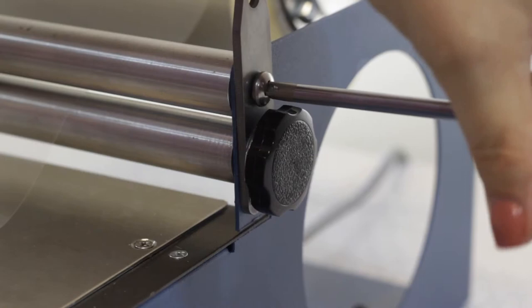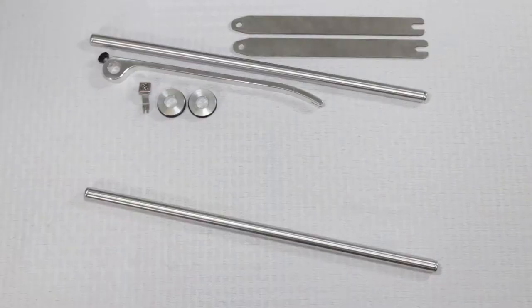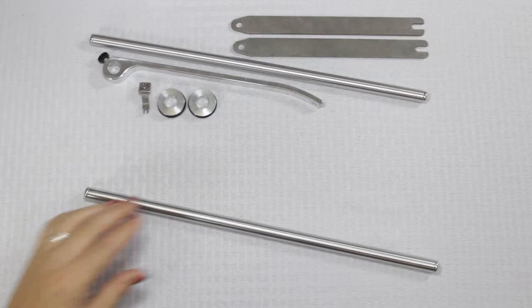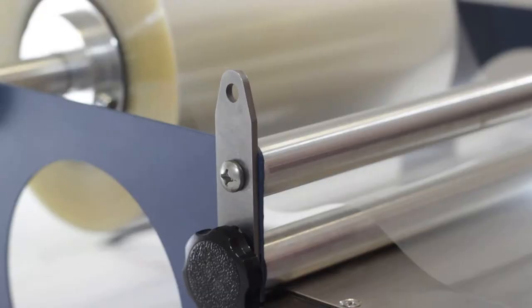With the brackets in place, we'll move on to installing the accessory bar. To install the accessory bar, remove the screw from each end and secure through the top hole of each bracket. Tighten the screws.